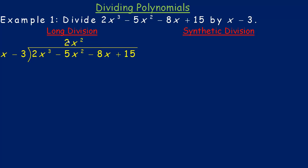Just like long division with numbers, you take that and multiply it by the divisor. So 2x squared times x minus 3 would be 2x cubed minus 6x squared. The 6x squared comes from multiplying by the negative 3. We'll put a line underneath it and subtract in long division. So 2x cubed minus 2x cubed would be nothing. We take negative 5x squared and subtract negative 6x squared — subtracting a negative is the same as adding the opposite. So it's negative 5x squared plus 6x squared, which would be 1x squared.